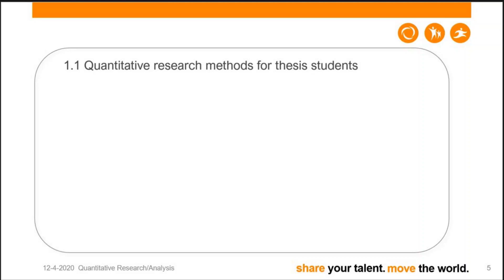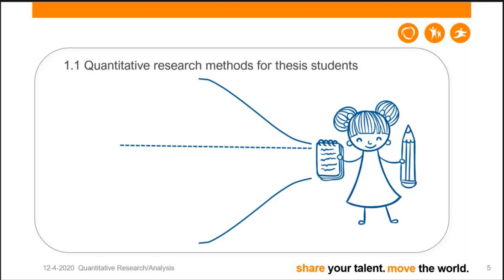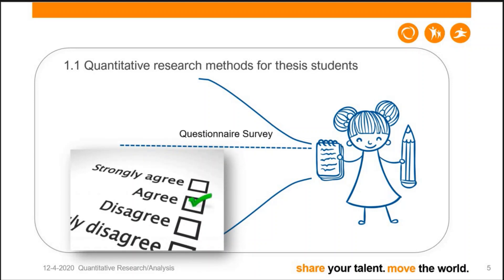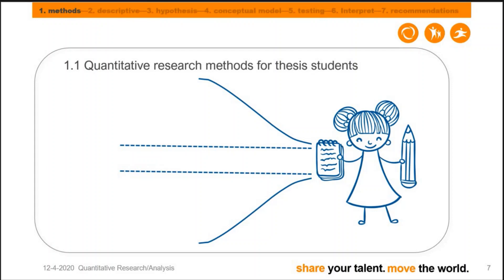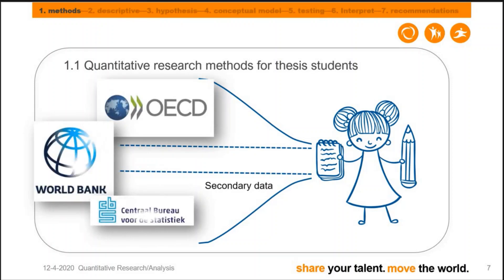There are three main methods frequently adopted by thesis students. The first is questionnaire survey, the most frequently used method. The second is observation, which has a subjective research route but is increasingly becoming quantified. The third is using secondary data from sources like OECD, World Bank, or governmental statistic bureaus — very useful for macroeconomic analysis.